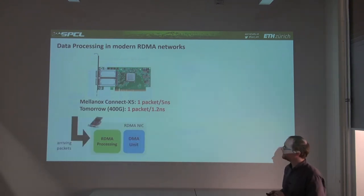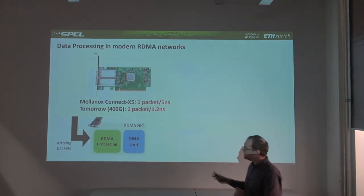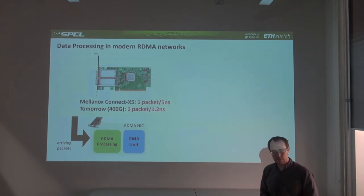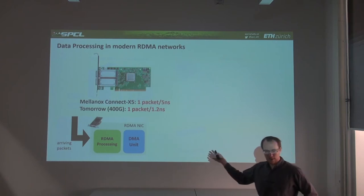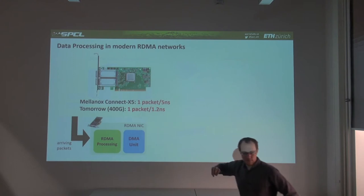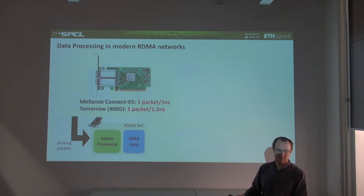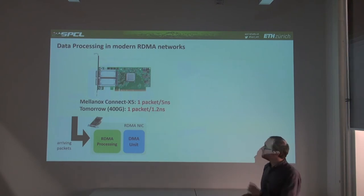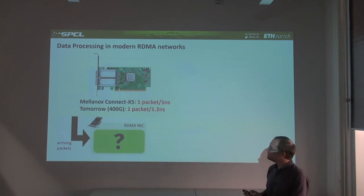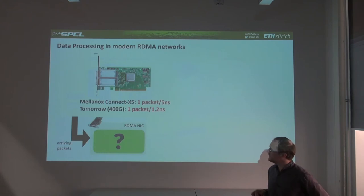There is one piece of our computer optimized for high-throughput packet processing: our RDMA NIC. That device today processes one packet every 5 nanoseconds, and tomorrow will process one every 1.2 nanoseconds. What if we could extend this device to perform very high-performance streaming processing of incoming packets, instead of processing them on the CPU?